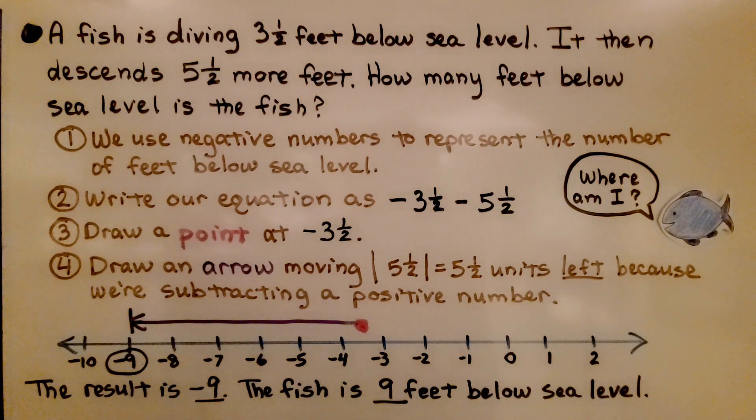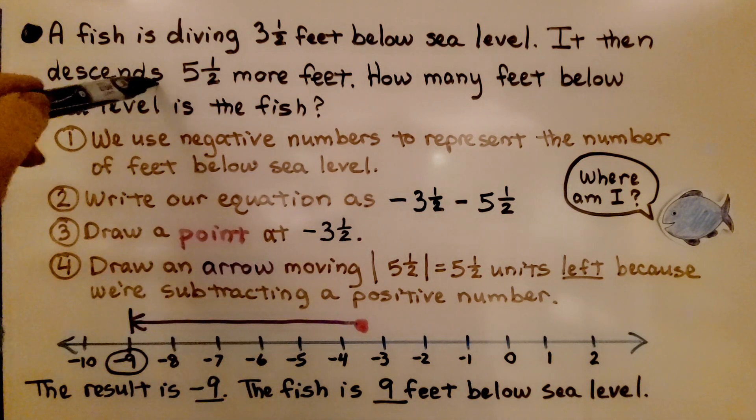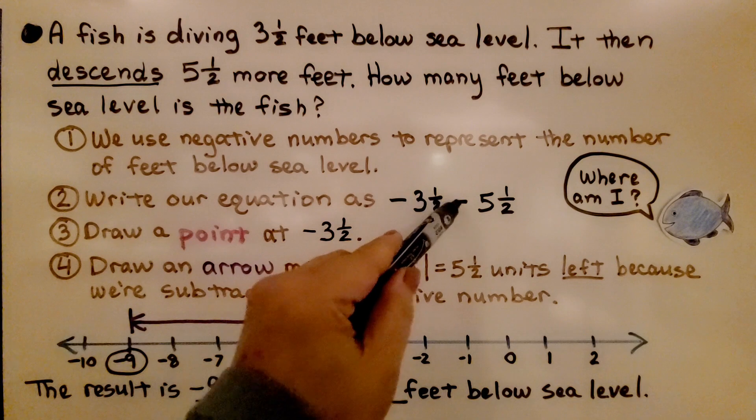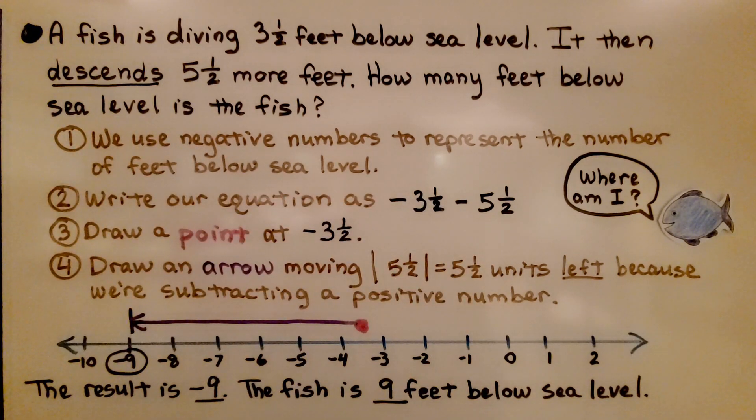So we write our equation as negative 3 and a half. It's descending, so we're going to take away 5 and a half. We have negative 3 and a half minus 5 and a half.